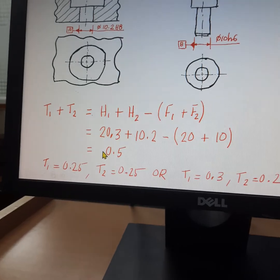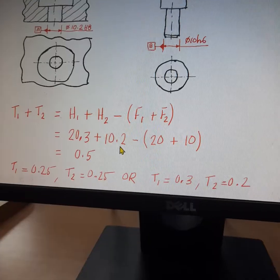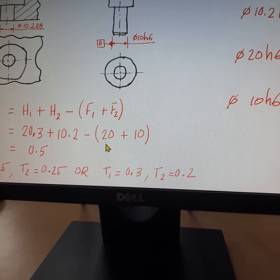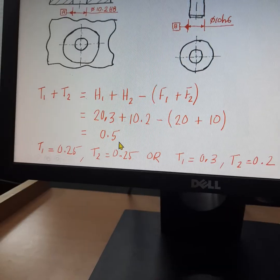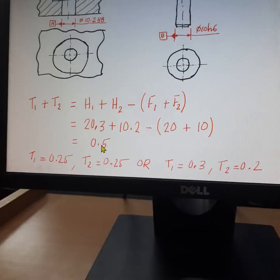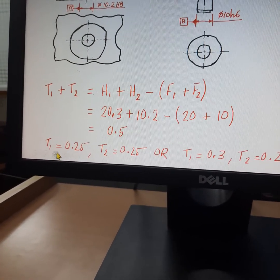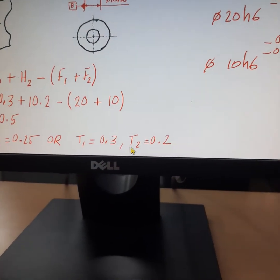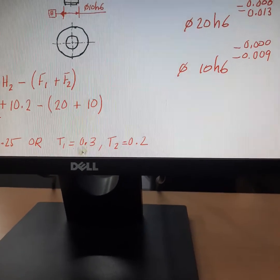Substituting these values into the equation: h1 = 20.3, h2 = 10.2, f1 = 20, f2 = 10. The value of t1 + t2 comes to 0.5. So t1 and t2 together should not exceed 0.5. This 0.5 can be allocated equally — t1 = 0.25 and t2 = 0.25 — or unequally, such as t1 = 0.3 and t2 = 0.2.